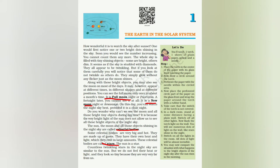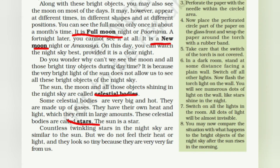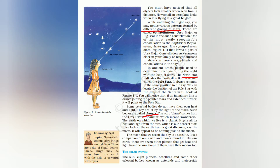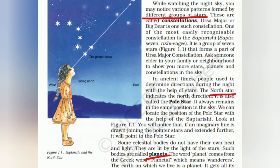Chapter 1 is 'The Earth in the Solar System.' Full moon is known as Purnima and new moon night is Amavasya. Celestial bodies include the sun, moon, and objects shining in the night sky. Stars are celestial bodies that emit light in large amounts and have their own heat. Constellations are different groups of stars. The Pole Star is the north star. Planets are celestial bodies but do not have their own heat or light — that is the key difference between stars and planets.